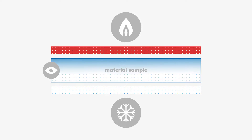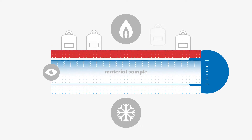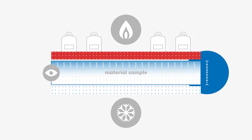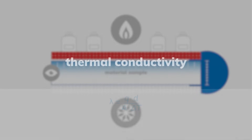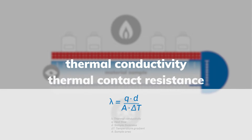Knowing the sample thickness and the measured heat flux, the sample's thermal conductivity can be calculated. With the TIM tester, the thermal resistance under variable load or compression can be measured, and from this, the thermal conductivity and the thermal contact resistance can be determined.